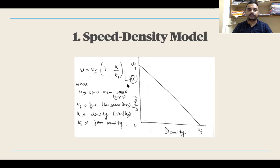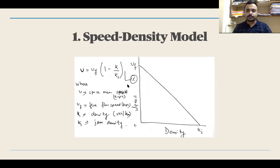The equation relating speed and density uses the basic equation between the three macroscopic parameters: q = u·k. The speed-density model states: u = uf × (1 − k/kj). This equation is the equation of a straight line. Please observe the figure — when the density is zero, that means negligible density.